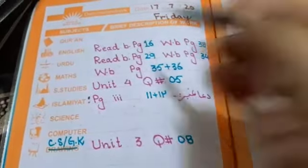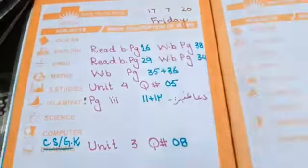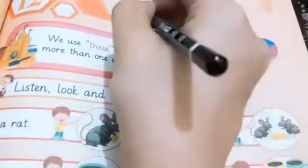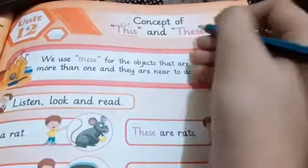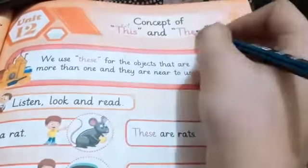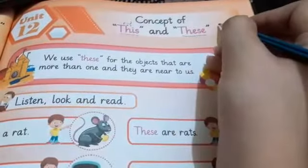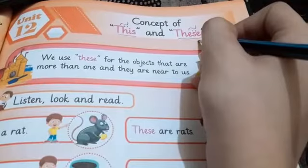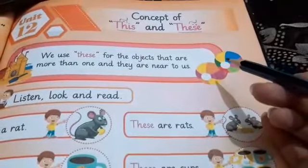Class prep, first of all, English diary reading book, page number 16. The concept of 'this' and 'these': 'this' means singular — one thing near to us. 'These' means more than one thing. We use 'these' for plural things, and 'this' for singular things. We use 'these' for objects that are more than one and near to us.